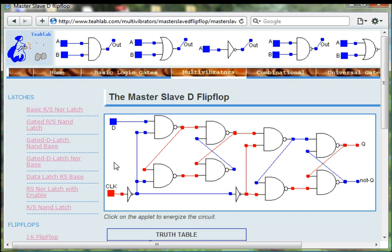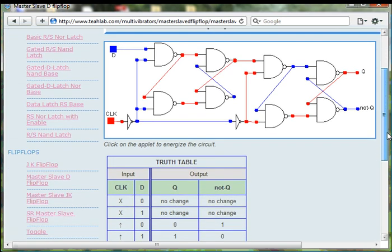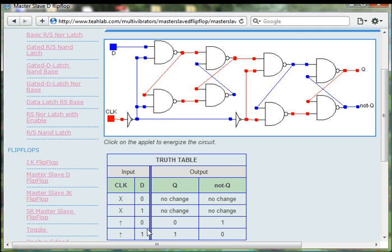From a truth table's perspective, here is what is going on. A change in the D input signal will only be reflected in the Q output signal after the clock switch has cycled.